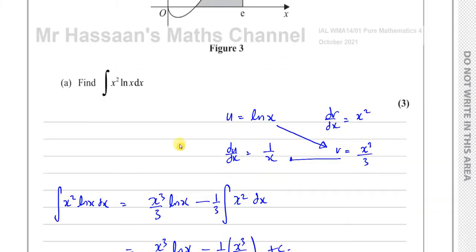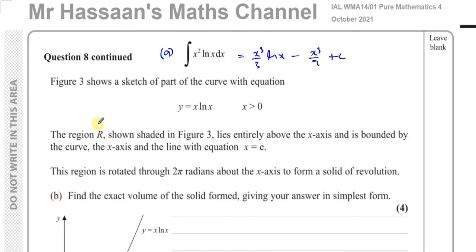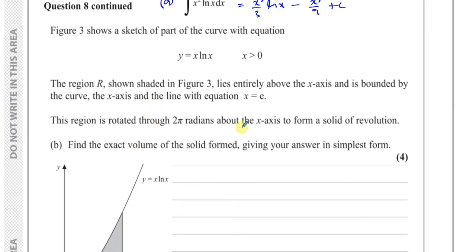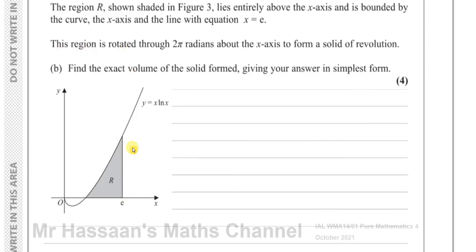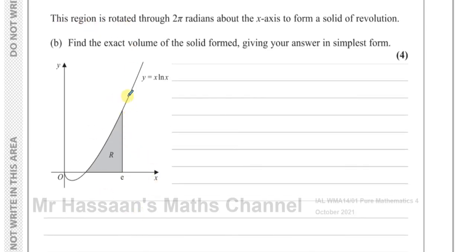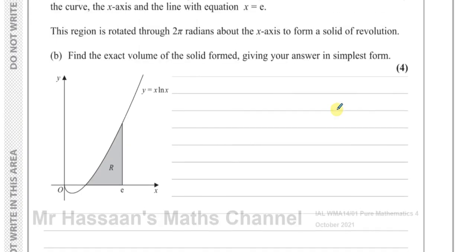Now we're going to go on to part B. It says figure 3 shows a sketch of the curve with equation y equals x ln x. The region R, shown shaded in figure 3, lies entirely above the x-axis and is bounded by the curve, the x-axis, and the line with equation x equals e. This region is rotated through 2π radians about the x-axis to form a solid of revolution — find the exact volume of the solid formed, giving your answer in simplest form.